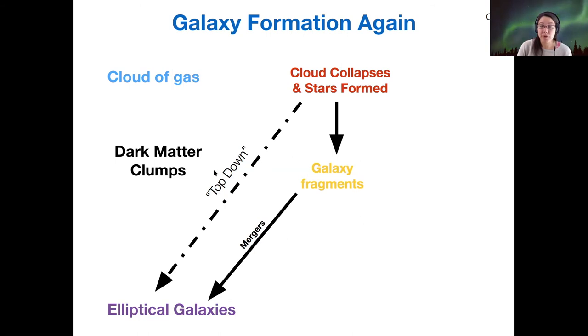So it seems like both of these processes probably each happened. And this is the bottom-up process. So I guess the difference between the top-down and the bottom-up is that in the bottom-up process, you're forming smaller pieces first, which merge together to form ellipticals. In the top-down, you're forming the whole elliptical in one go.